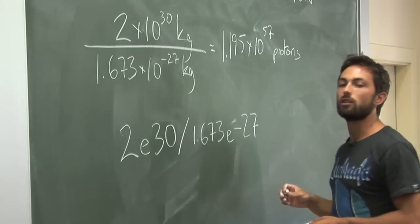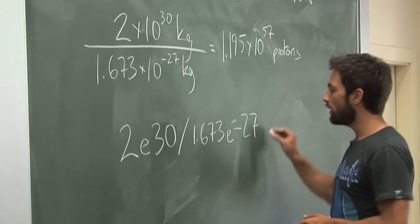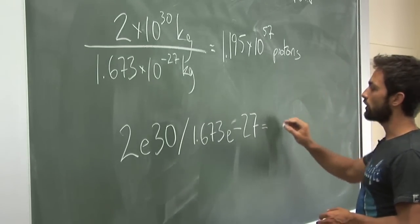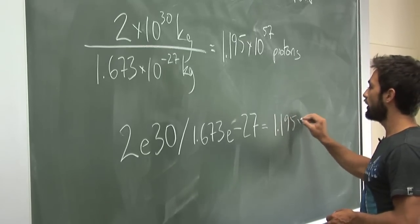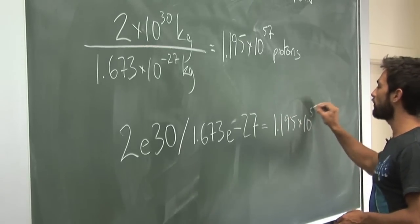then divide by 1.673 e minus 27. So if you type that straight into the Google search field, you will find it will give you the answer 1.195 times 10 to the power of 57.